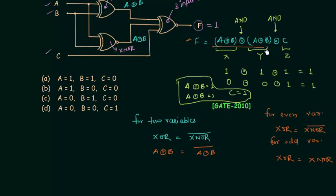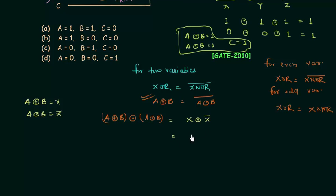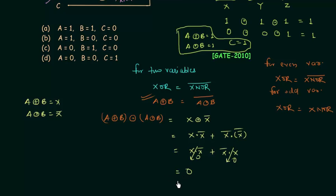Let X = A XOR B. Then A XNOR B = X complement, by the property just stated. So the inner expression becomes X XNOR X complement. Expanding: X·X complement OR X complement·X complement... wait — expanding XNOR: (X·X complement) OR (X complement·X). Since X·X complement = 0 and X complement·X = 0, the result is 0. So A XOR B XNOR A XNOR B equals 0.